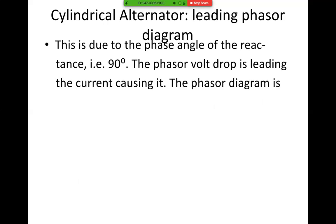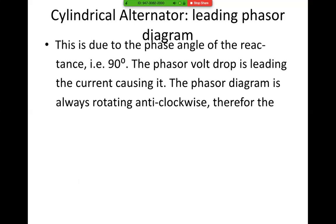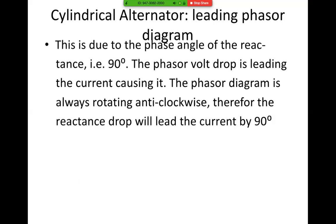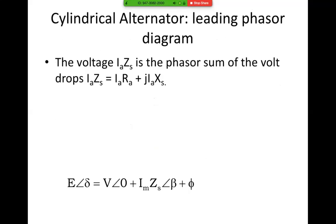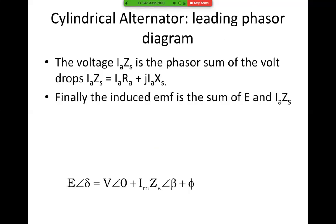The phasor drop is leading the current causing it. The phasor diagram is always anti-clockwise; therefore the reactance drop will lead the current by 90 degrees. There we have IaRa, and in order to lead it, it must be perpendicular. There is IaZs, and the voltage IaZs is the sum of all the drops: IaRa and j·IaXs. Therefore, E angle delta equals V angle zero plus IaZs angle beta plus or minus phi. Finally, the induced EMF is the sum of V and IaZ, giving us IaRA, IaXs, IaZs, and then E.